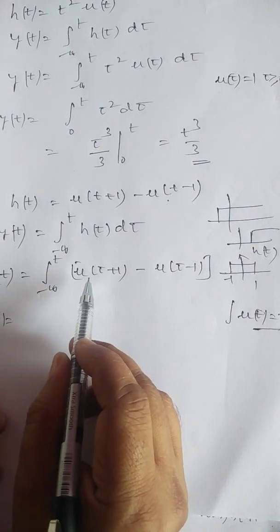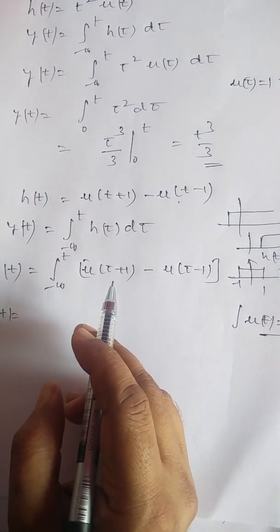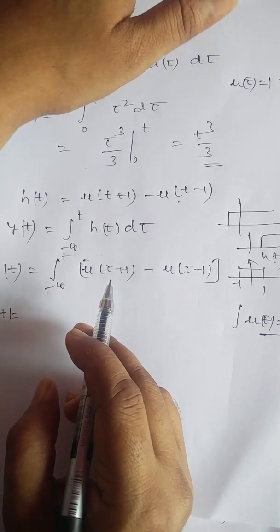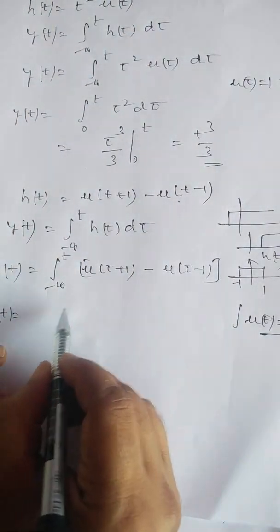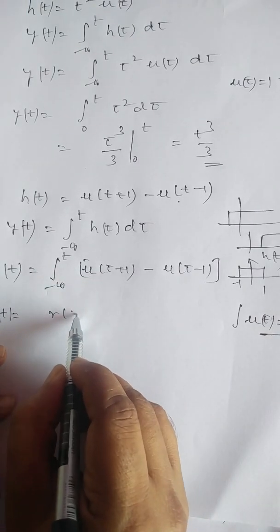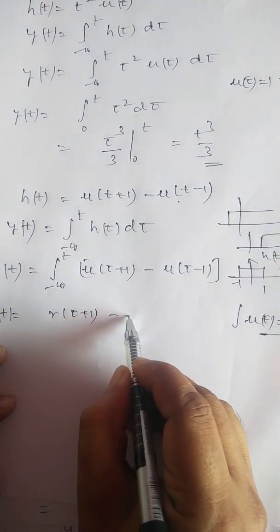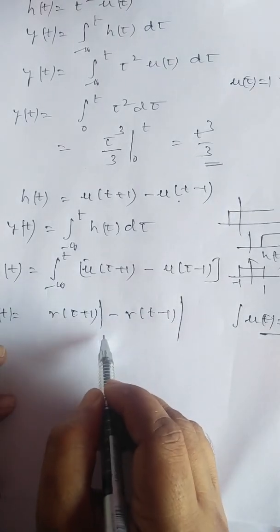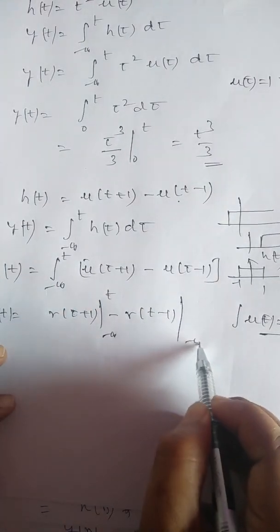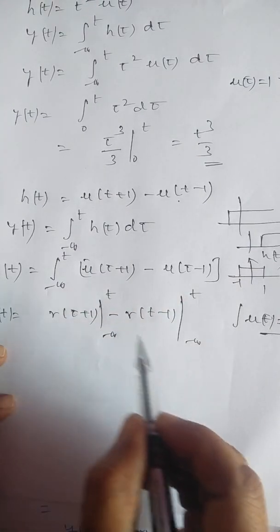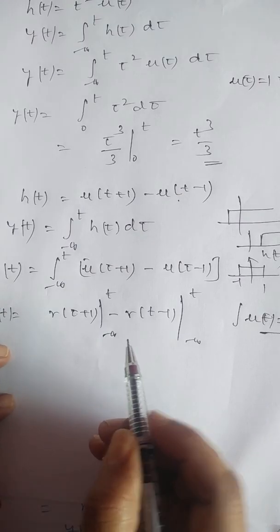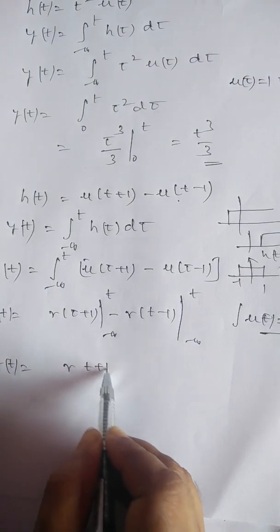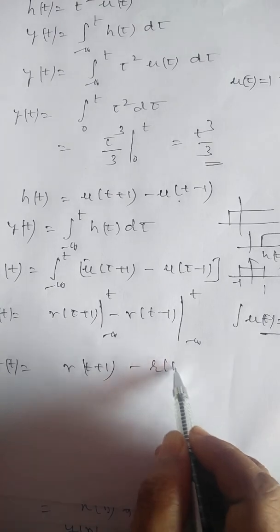Therefore, y(t) = r(t+1) − r(t−1), where r(t) denotes the ramp function. Substituting the limits from minus infinity to t, the answer is y(t) = r(t+1) − r(t−1).